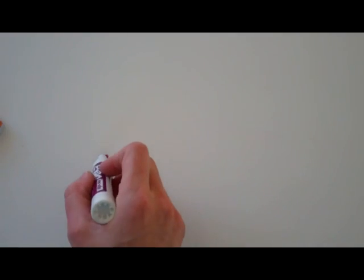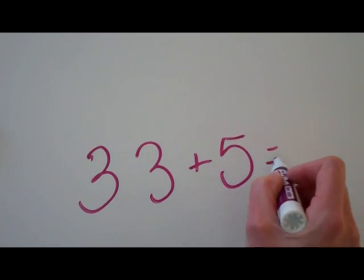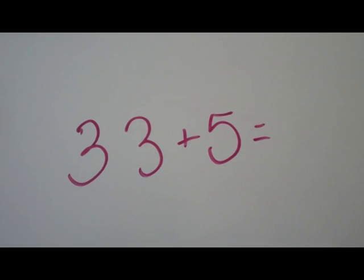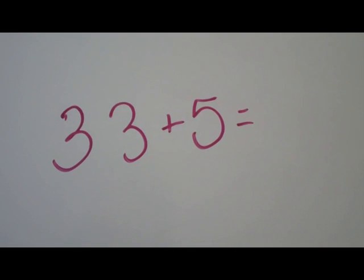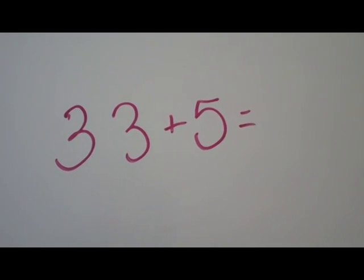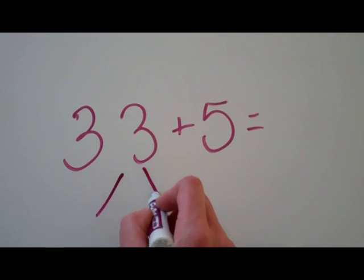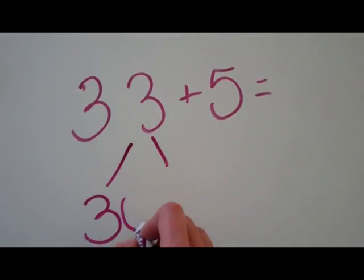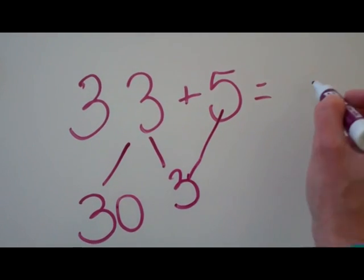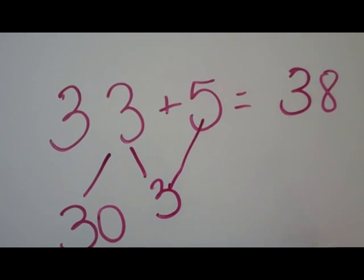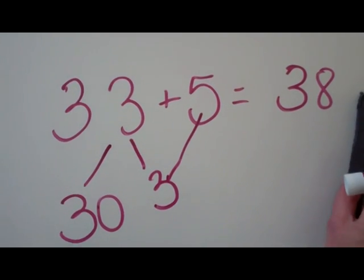In our overview of this chapter I'm going to tell you what we're going to be working on so that you can help at home if you choose to. Basically to add without renaming, this is a strategy where we take it and break it into a 30 and a 3. All you have to do is add your ones. The answer is 38. And this isn't stuff you do on paper, this is stuff you do in your head.